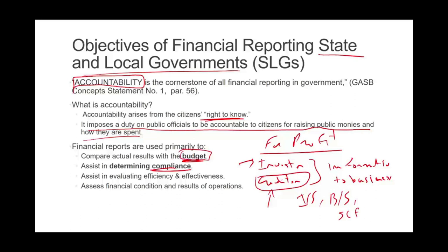The budget is important because let's assume a government sets a budget every year, then ends up blowing the budget — spending more money than they planned. What happens next time there's an election? Most probably, those politicians will not be voted in again. That's why the budget is important: it gives the people the right to know, the ability to know what's going on, and by doing so they can hold the government accountable. The financial report helps users — the voters — evaluate how well the government is running, whether they are achieving their objectives efficiently and effectively, at the lowest cost possible without wasting resources.